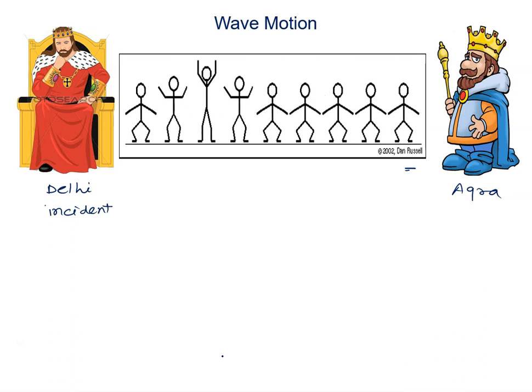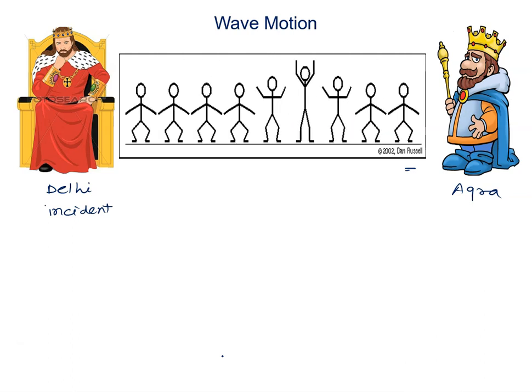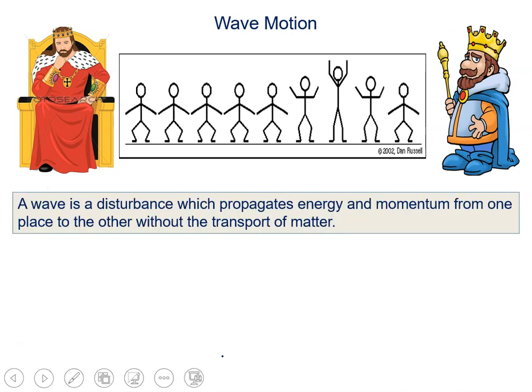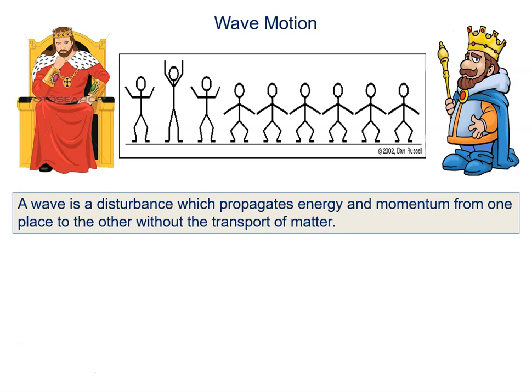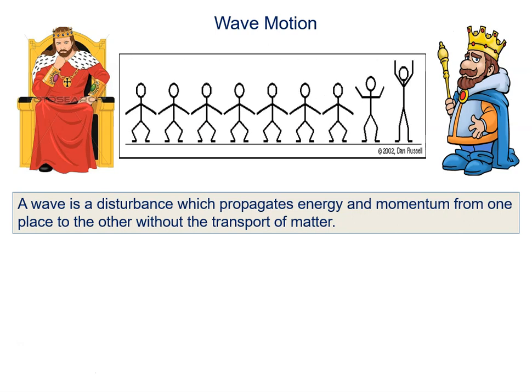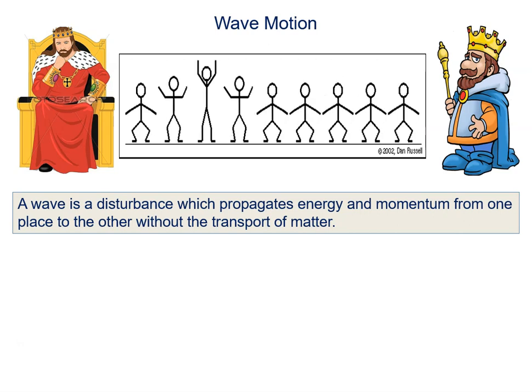So what we observed that message is transferred from Delhi to Agra with the help of the medium particle. But medium particle cannot dislocate from the respective position, only they can vibrate or they can excite. This is known as a wave motion. So wave is a disturbance which propagates energy and momentum from one place to other place without the transport of matter or particle.